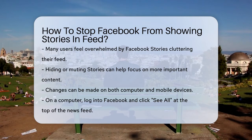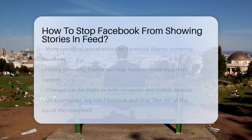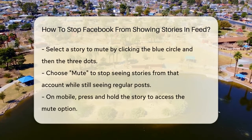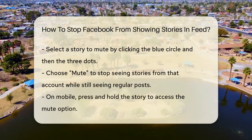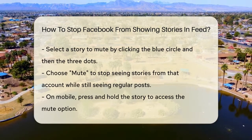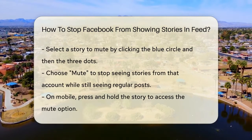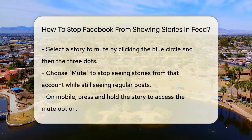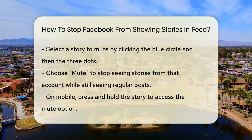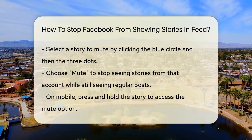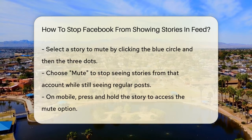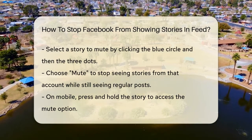To start, you can use your computer or mobile device to make these changes. On a computer, log into your Facebook account and go to the top of your news feed where you'll see the active stories. Click on 'See All' to view all the stories at once. Then select the story you want to mute by clicking on the blue circle to see its details. Next, click the three dots on the right-hand corner of the story and select 'Mute.' You'll get a confirmation pop-up, and once you confirm, you won't see stories from that account anymore, but you'll still see their regular posts.